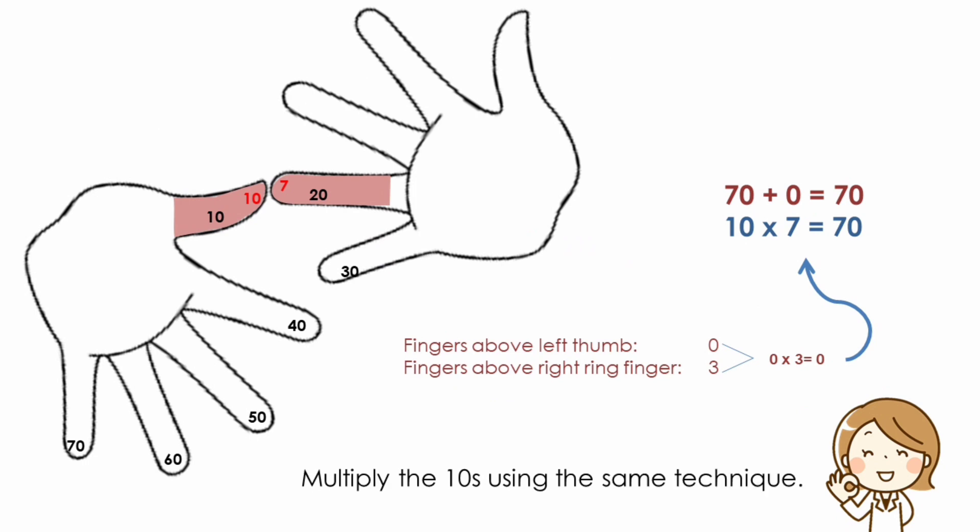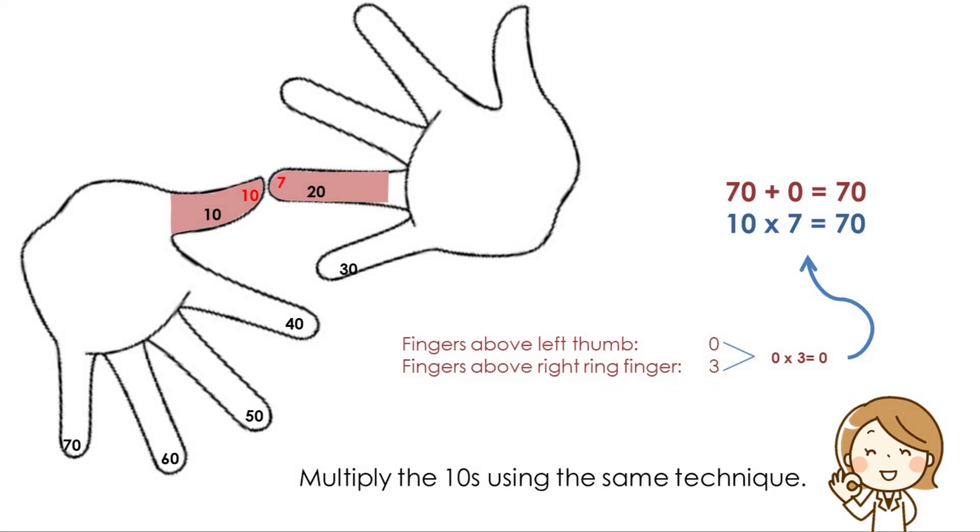Multiply by tens using the same technique. For example, if you want to find the answer to 10 times 7, begin by touching your left thumb with your right ring finger. Count the number of fingers below the touching fingers, including the fingers that are touching. There should be a total of 7, which remember means 70.